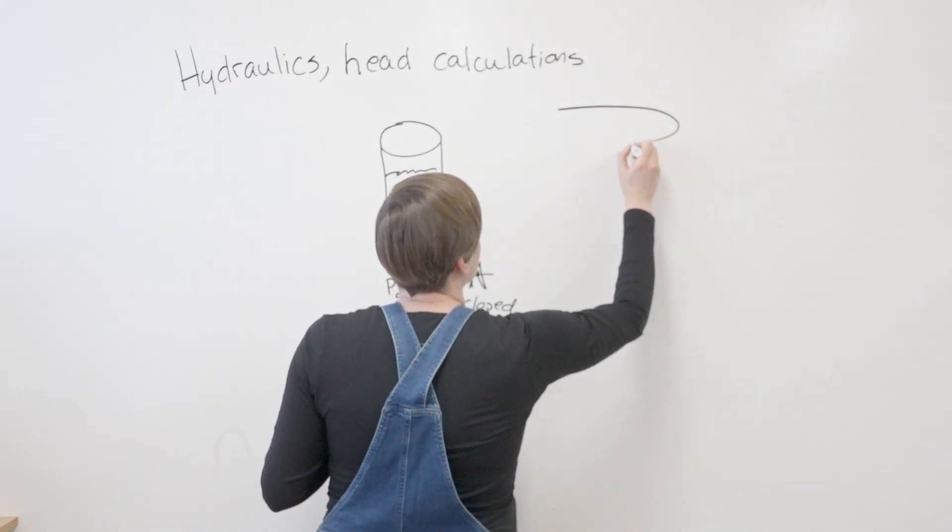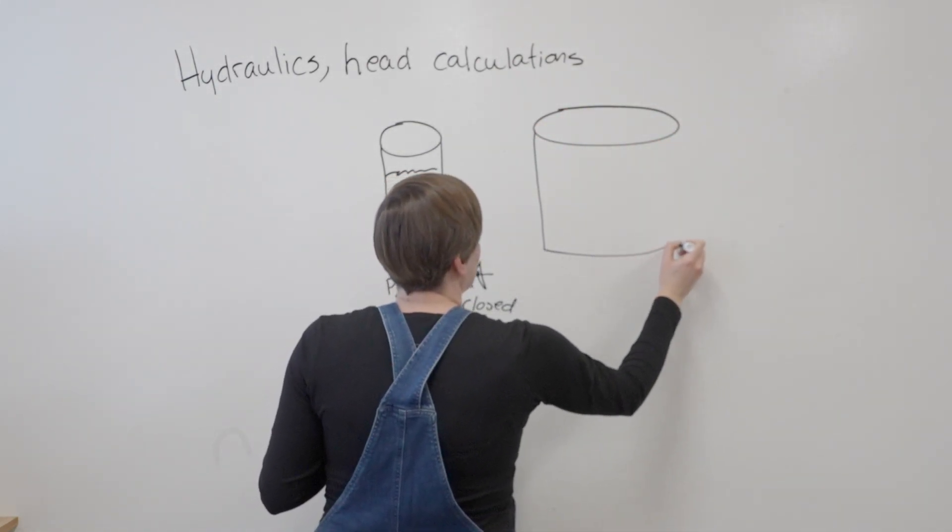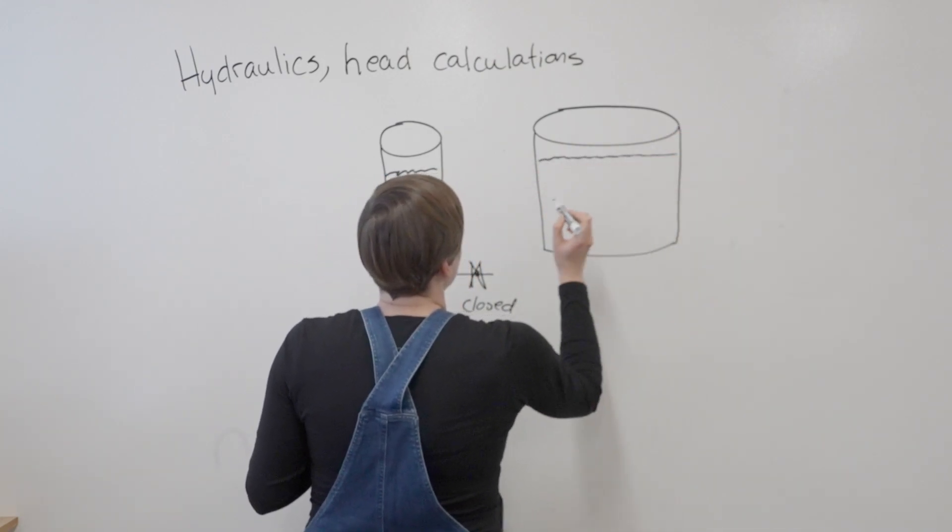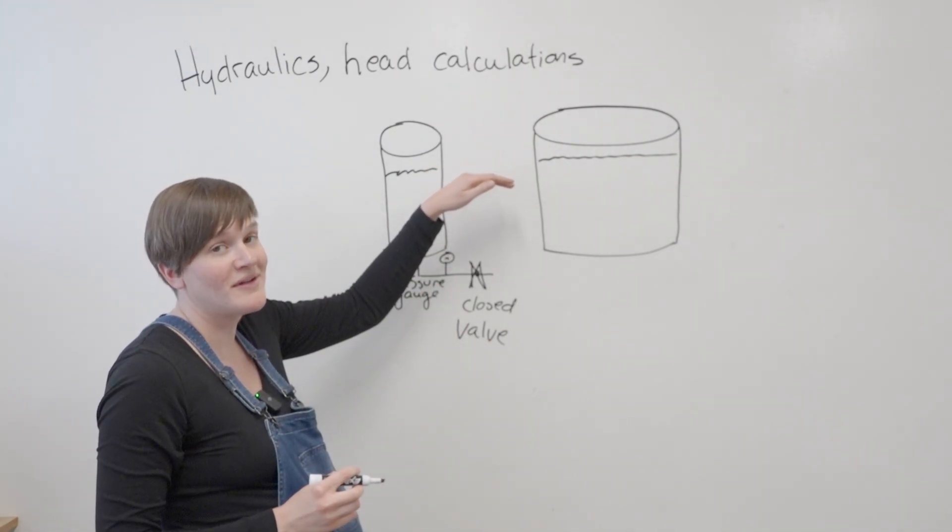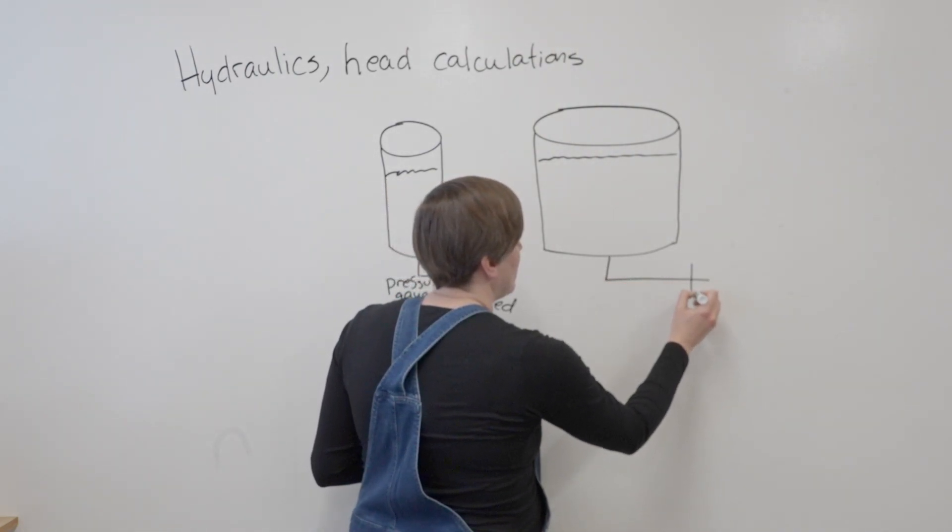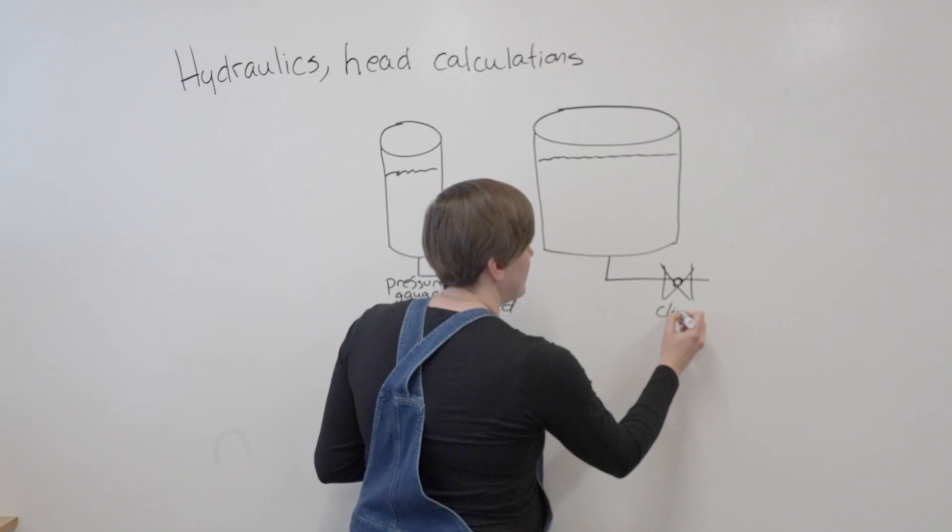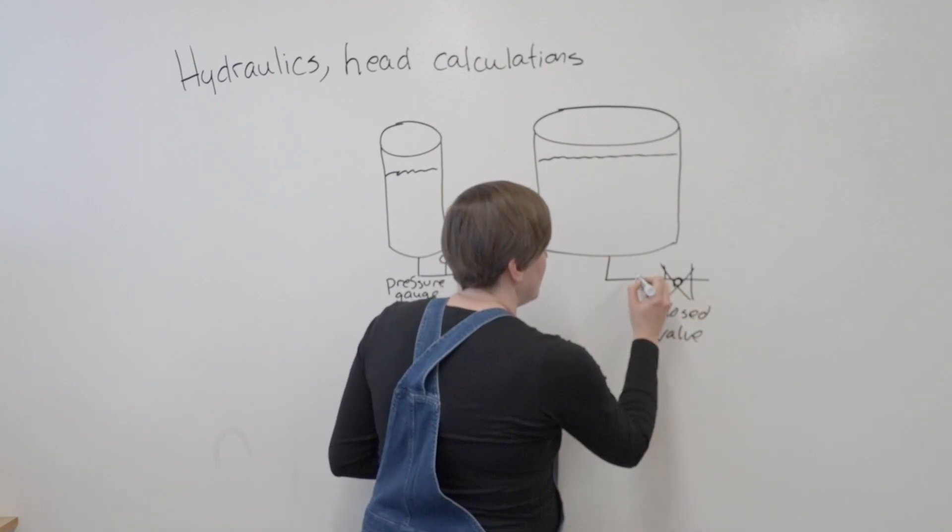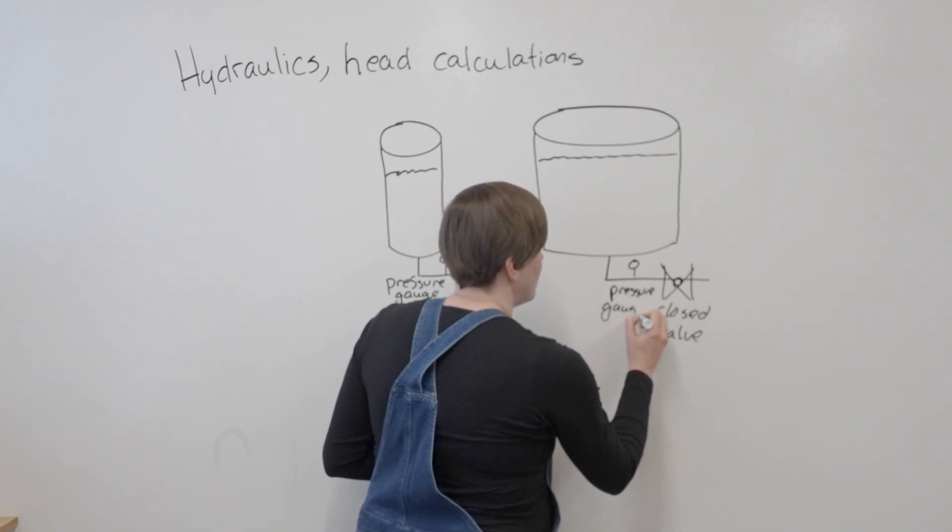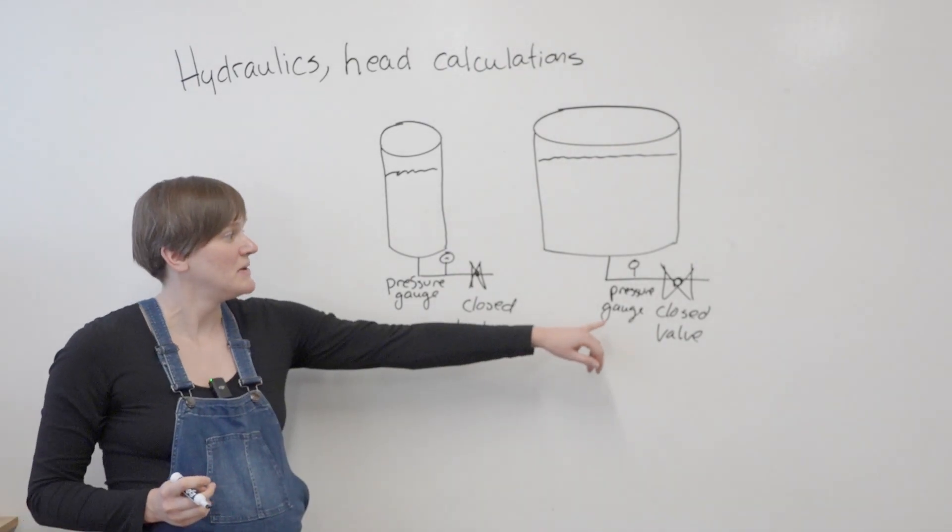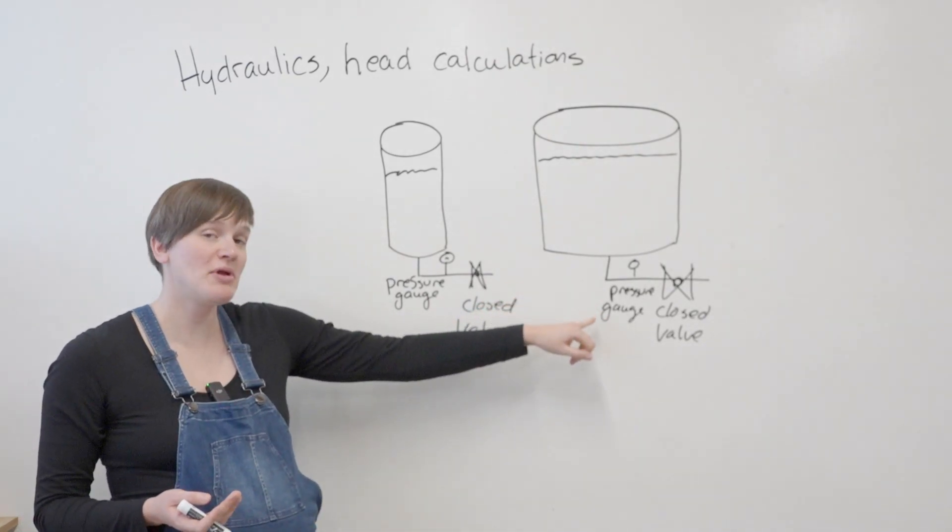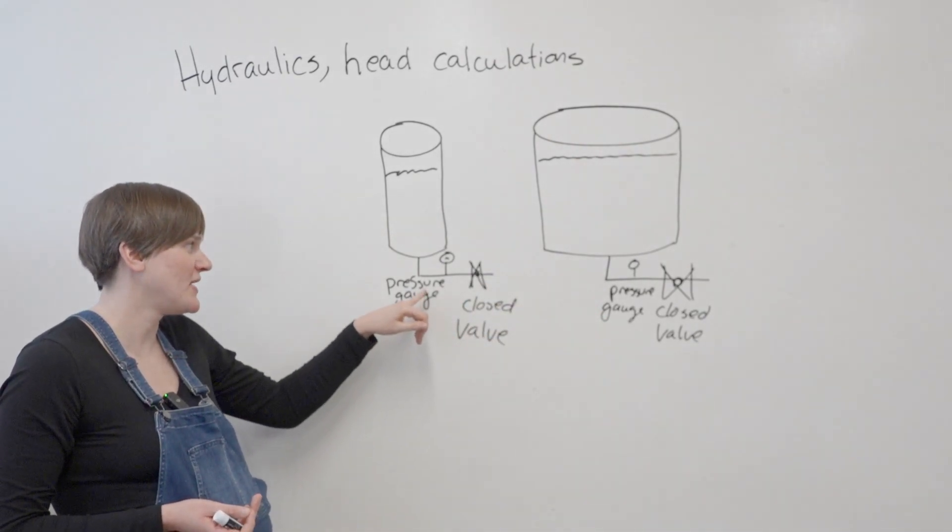So another question. Now next to it you've got a bigger tank. It's got water in it, the same height of water as in the first tank, but it's a bigger tank. Here you've got a closed valve, and here you have a pressure gauge. Will you be reading a pressure here? Yes. Will it be more or less than the pressure that you're reading on this tank?